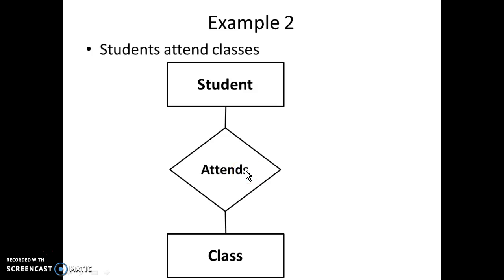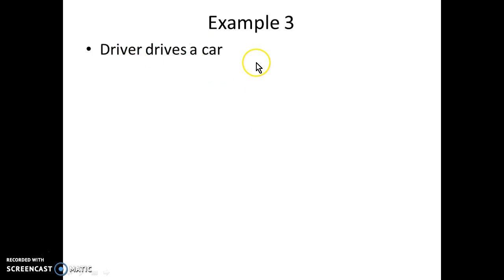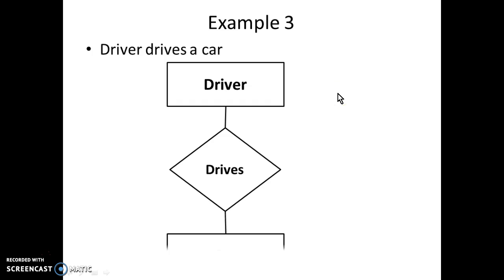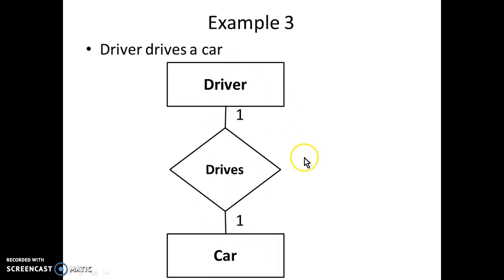Let's take another example: 'driver drives a car.' To represent a real scenario, one driver at a time drives only one car, and that car is driven by one driver — so this is a one-to-one cardinality. You can add an attribute to the 'drives' relationship, such as date and time, representing which driver drove which car on which date and time.